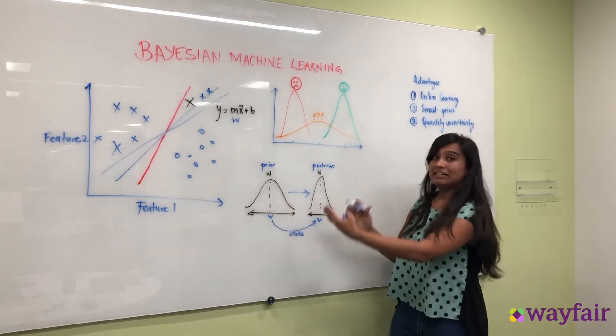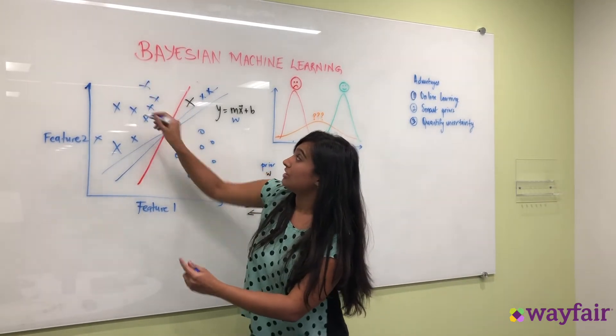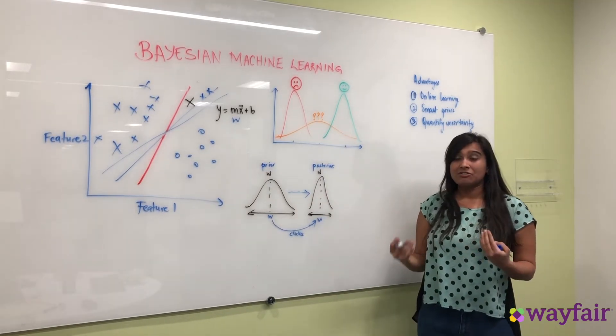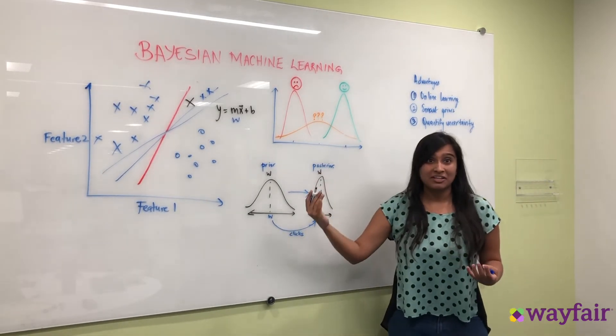So now you could have a completely different w or if you get more hot dogs in this space you're going to keep increasing your confidence. So Bayesian machine learning allows you a very easy and algorithmic way to quantify the uncertainty in your model prediction.